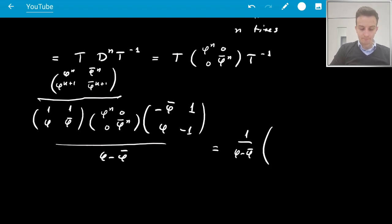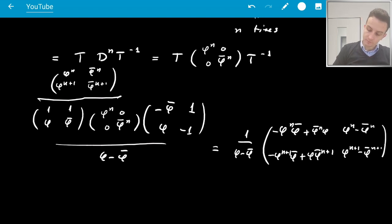So it'll be 1 over phi minus phi bar. And then we have phi n, phi bar, plus phi bar n, phi. Then it's just phi n minus phi bar n. And then phi n plus 1, phi bar, plus phi bar n plus 1, phi. And then phi n plus 1 minus phi bar n plus 1. Okay.